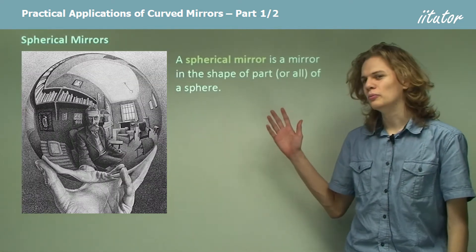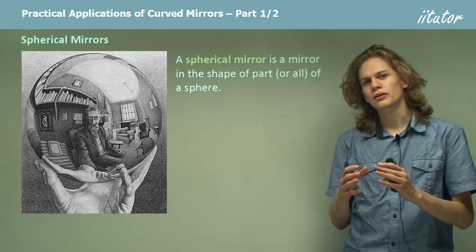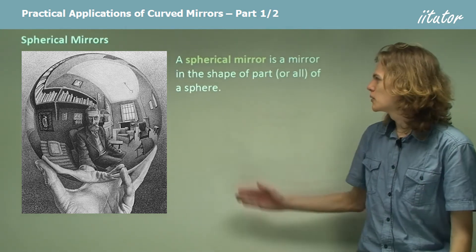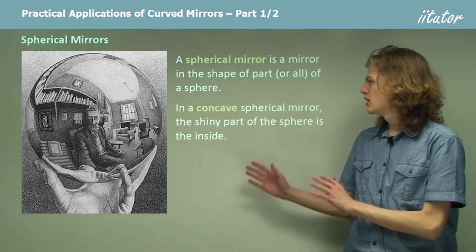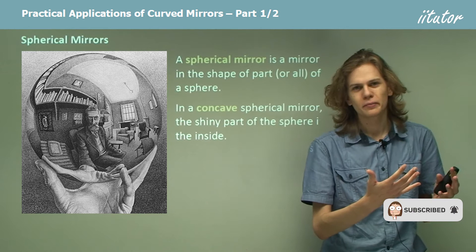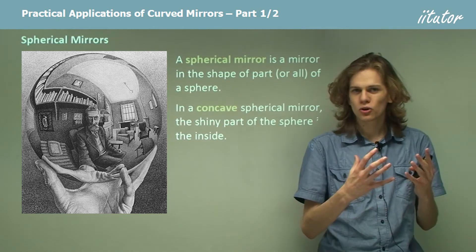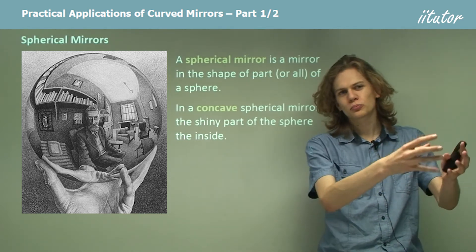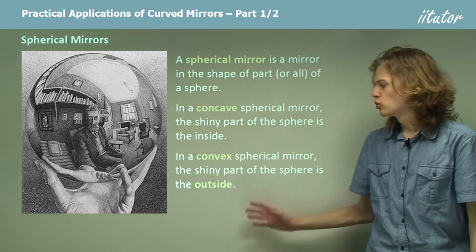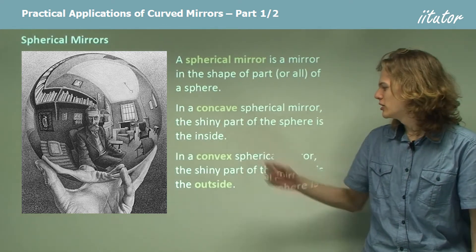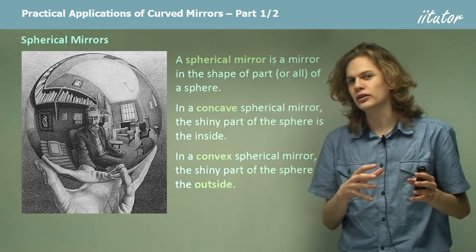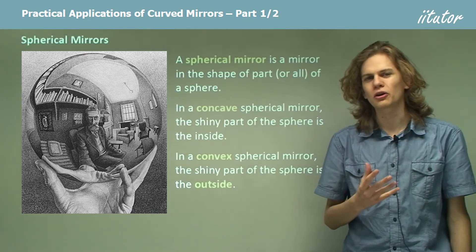A spherical mirror is a mirror that's part of, or a complete sphere, as we can see in this picture over here. In a concave spherical mirror, we're looking at the inside of the sphere — it's concave, but if we spread it all the way around it would form a sphere. In a convex mirror, the outside of the sphere is shiny — we just take a chunk of it. That's a convex mirror.